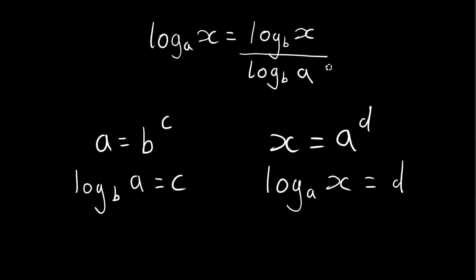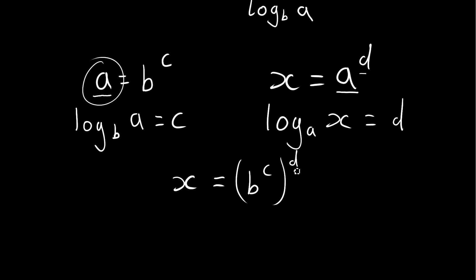And with these exponentials, we can also combine them because we've got the base a here and the result here. And we can combine these two. So we end up with x being equal to b to the power of c, which was our original a over here, to the power of d. And when you have an exponential like this where you have two powers that are multiplied by one another, we end up with x being equal to b to the power of c times d.